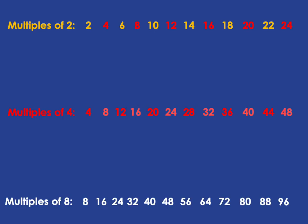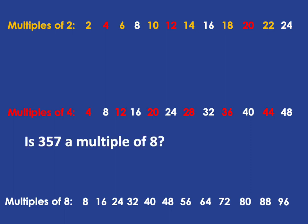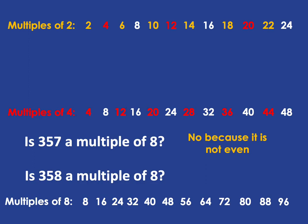The same will be true for the multiples of eight — any multiple of eight is also a multiple of four and also a multiple of two. This can help us: if I asked you is 357 a multiple of eight, you can immediately tell me no, because 357 is not even, and we know any multiple of eight also has to be a multiple of two, so it has to be an even number. If I asked you is 358 a multiple of eight — well, 358 is even, but we still don't know whether it's a multiple of eight.